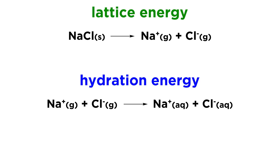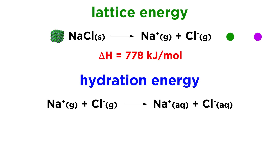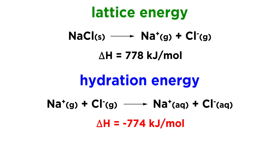Let us therefore get quantitative. The lattice energy and hydration energy of sodium chloride are tabulated values that we can easily look up. As it turns out, the lattice energy is 778 kilojoules per mole. What this means is that 778 kilojoules of energy would be required to separate every ion in one mole of sodium chloride such that no electrostatic interactions are being made any longer. Additionally, the hydration energy of sodium chloride is negative 774 kilojoules per mole. This means that 774 kilojoules of energy would be released if all of the ions in one mole of sodium chloride were to go from totally isolated to being fully hydrated by water molecules.